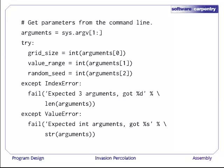The first thing we need to do in our main driver is get parameters from the command line. We get all but the first element of sys.argv and store it in the variable arguments. If you recall, sys.argv[0] is the name of the program, and we don't need that. We then convert the first three values in arguments to integers and assign them to grid_size, value_range, and random_seed. If we get an index error, it means that one of the indices 0, 1, and 2 wasn't valid, so we don't have enough arguments. If we get a value error, it means that one of our attempts to convert a string to an integer failed, and we print an error message.